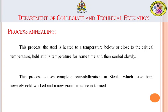In process annealing, the steel part is heated below or close to the critical temperature — not at or above it — and held at this temperature for some time, then cooled slowly. This process causes complete recrystallization in the steel that has been severely cold-worked, and a new grain structure is formed.